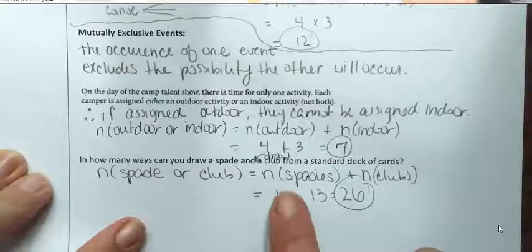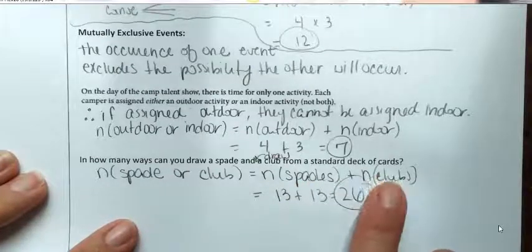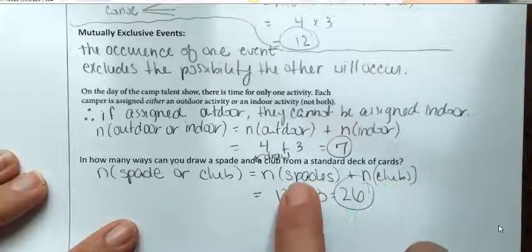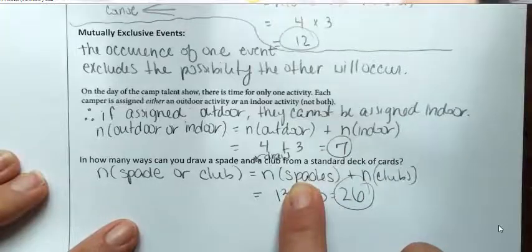Now, if it was draw a spade and then draw another spade, that's going to be a little bit different — because now you've already drawn a spade. So those are not mutually exclusive events.